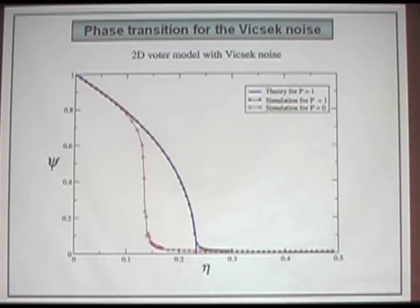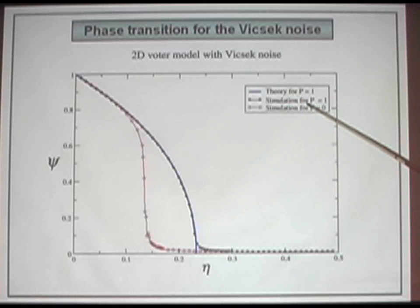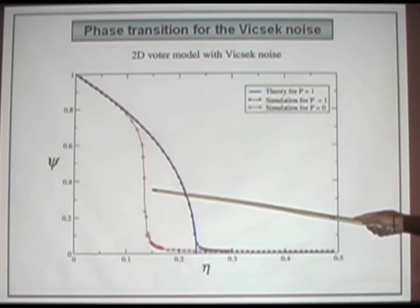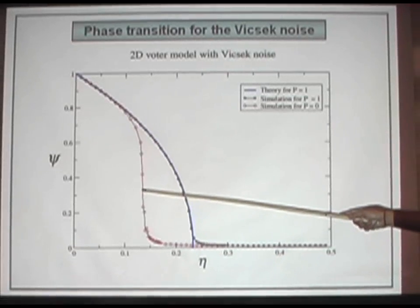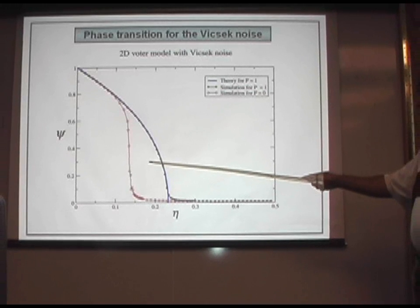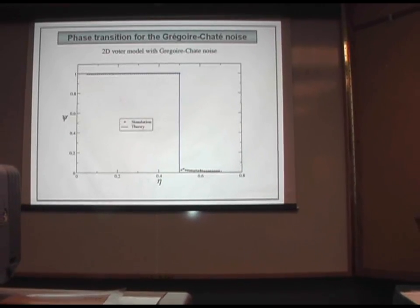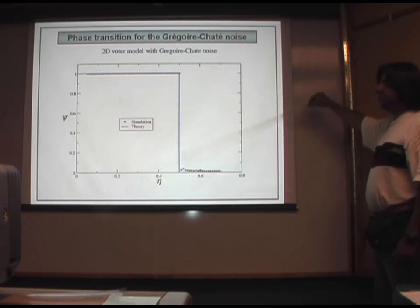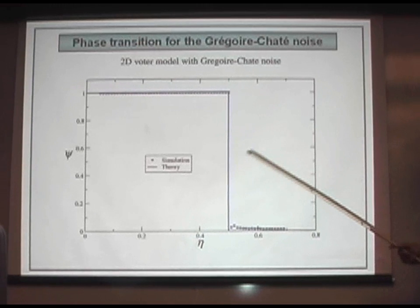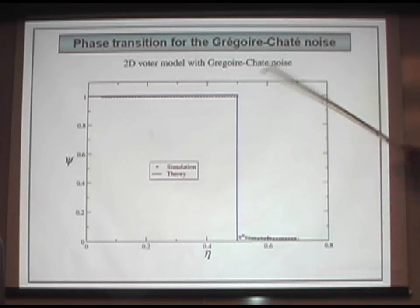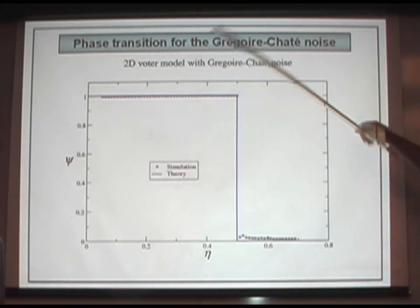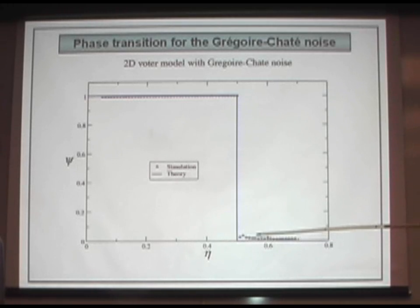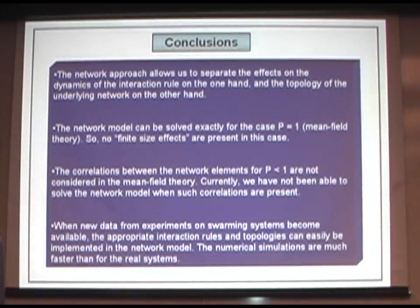Now we have binary variables. You can see that for the Vicsek type of noise the phase transition is continuous, and we can solve the system analytically. The same behavior happens: when we increase the rewiring probability of the network, the phase transition approaches the prediction of the mean field theory. For the Chaté type of noise, we observe a discontinuous phase transition. This transition is very spectacular because for values of the noise smaller than the critical noise, the order parameter is equal to one exactly, and for values of the noise larger than the critical noise the system is always disordered. You can see this in the computer with your bare eyes.